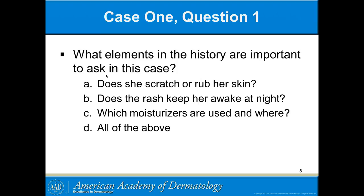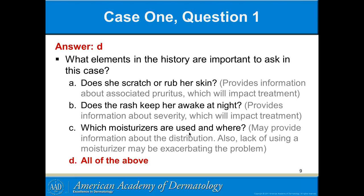What elements in the history are important to ask? Does she scratch or rub her skin? She almost certainly does. Does the rash keep her awake at night? That's functionally important — if they don't sleep properly they get stressed and it makes their skin worse. Which moisturizers are used and where? You want to know what someone's putting on, when they're putting it on, and where — it should be all over. The correct answer is all of the above.